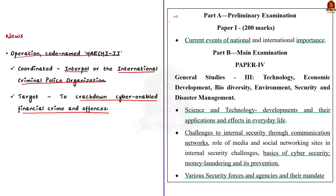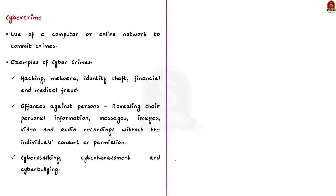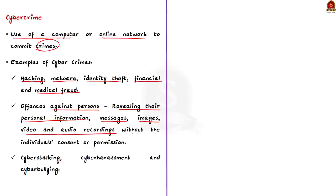The syllabus covered by this article is given here; you can make a note of it. Cybercrime is the use of a computer or online network to commit crimes. Cybercrime includes hacking, malware, identity theft, financial and medical fraud. It also includes certain offences against persons involving revealing their personal information, messages, images, video and audio recordings without the individual's consent or permission.